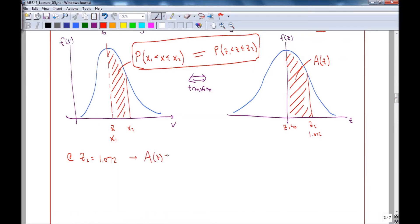So A of Z equals 0.3581. And so finally, the probability is equal to 35.8%.